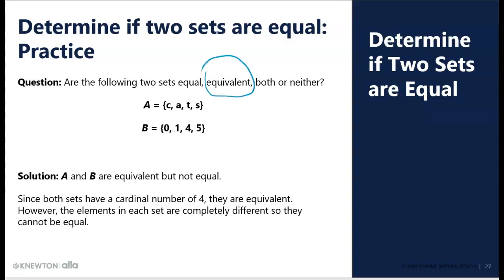Now, if I had had 0, 1, 4, 5, 6 in B, there would be neither because B would have had one more element than A. So, the first thing you do is find the cardinal number and then see if the elements match. They might be just written in a different order.